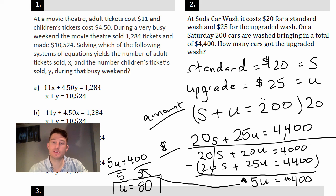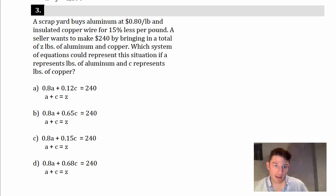All right, that's all you gotta do to solve a problem like that. Let's keep going. All right, this is number three. It says a scrapyard buys aluminum at 80 cents per pound and insulated copper wire for 15% less per pound. A seller wants to make $240 by bringing in a total of Z pounds of aluminum and copper. Which system of equations could represent this situation if A represents pounds of aluminum and C represents pounds of copper? All right, so let's do this. I always say it's easier to start with your amount equation. Actually, let's identify variables first.